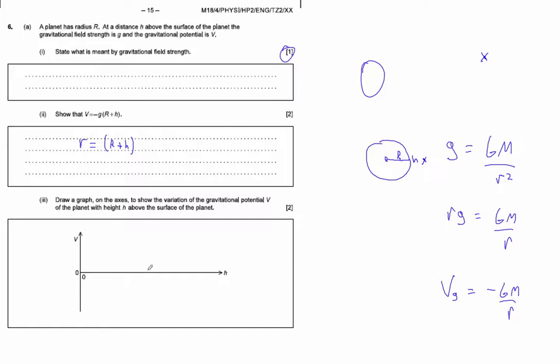And then it says, draw a graph on the axes to show the variation of the gravitational field of the planet with height H above the surface. Remember that this gravitational thing there is asymptotically like... This is X and Y. This is our gravitational potential. This is our radius.